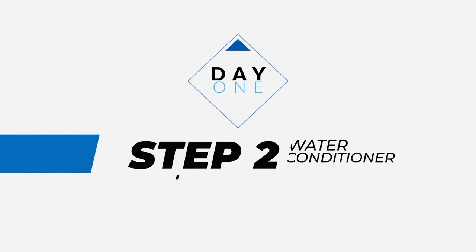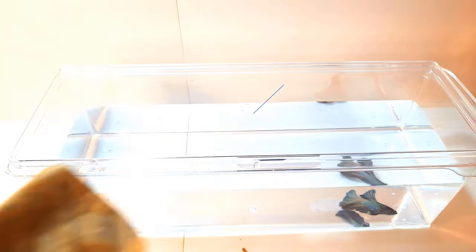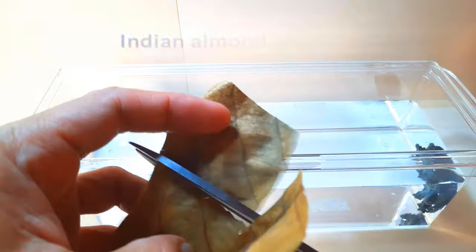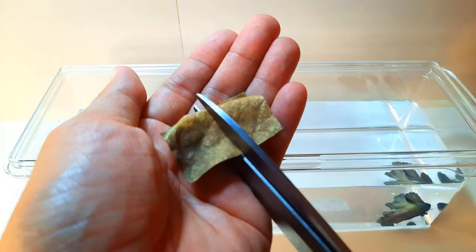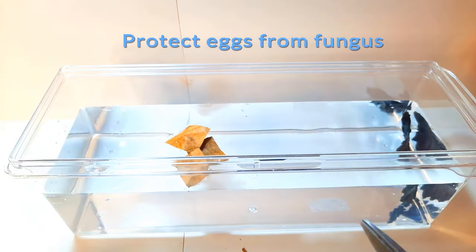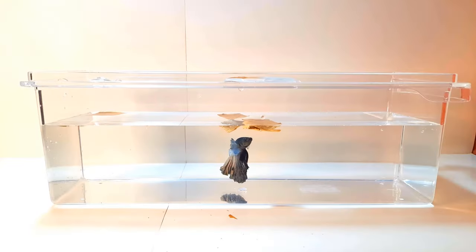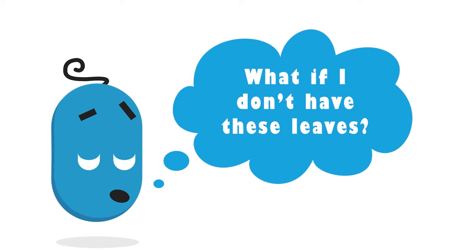Step 2. Day 1. Water Conditioner. Condition the water with crispy dried leaves of Indian Almond Tree. This will kill bacteria, and will protect the eggs from fungus.